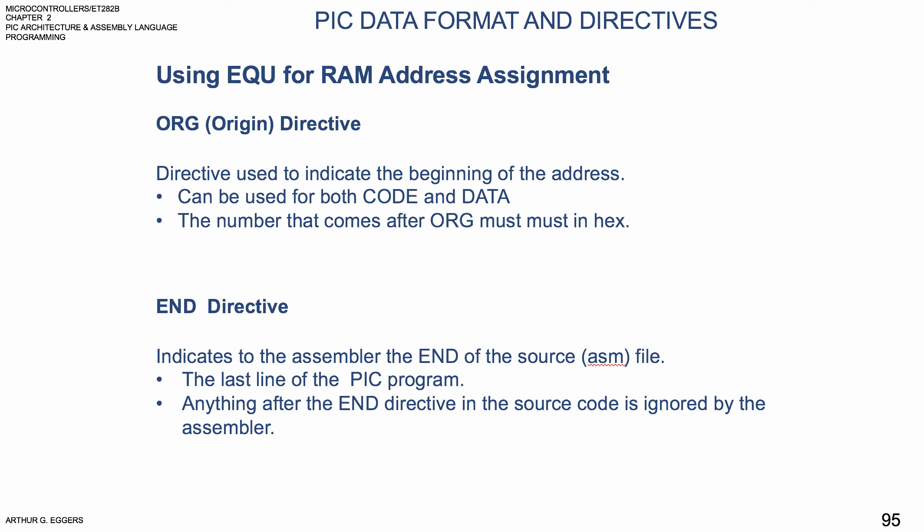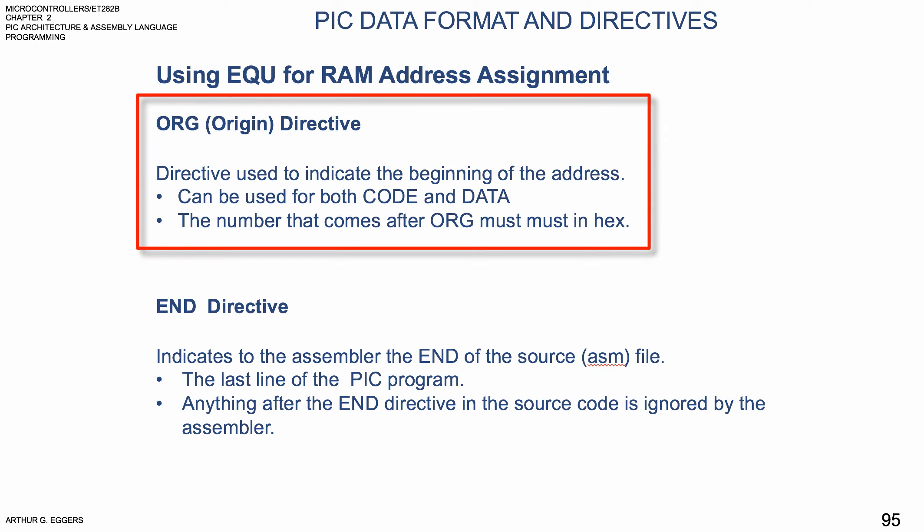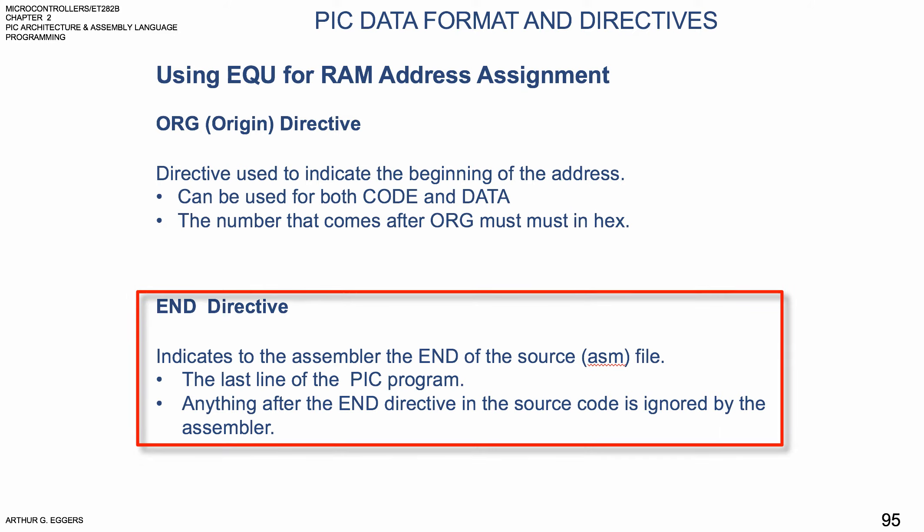The ORG, or origin directive, is used to indicate the beginning of an address. It can be used for both code and data, and the number that comes after ORG must be in hex. The end directive is another important pseudocode — it indicates to the assembler the end of the source ASM file. The end directive is the last line of the PIC program, meaning anything after it in the source code is to be ignored by the assembler.